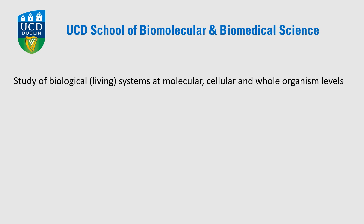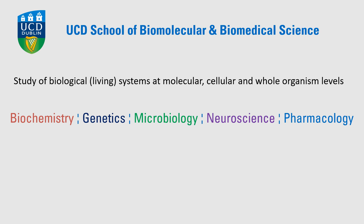The first question you might have is: what is Biomolecular and Biomedical Science? Really it's about studying biological or living systems, and we look at them at the molecular level, cellular level, and then at whole organism levels. In the School of Biomolecular and Biomedical Sciences we do this through different subjects or different lenses and different ways of looking at living systems.